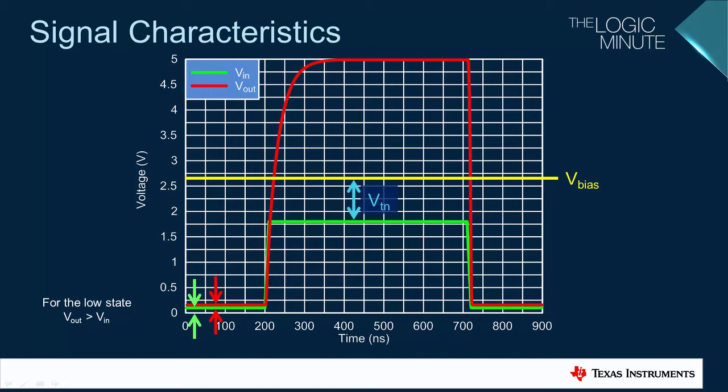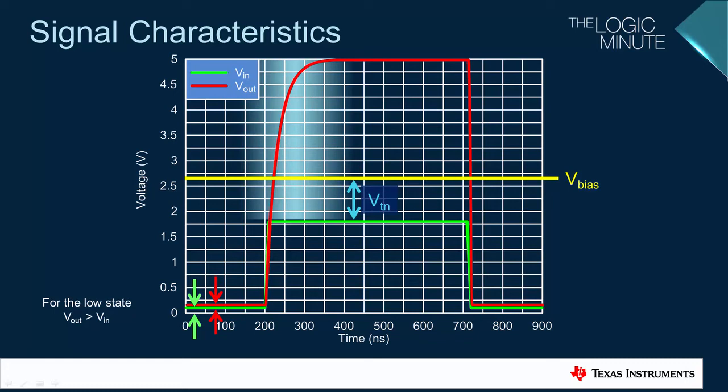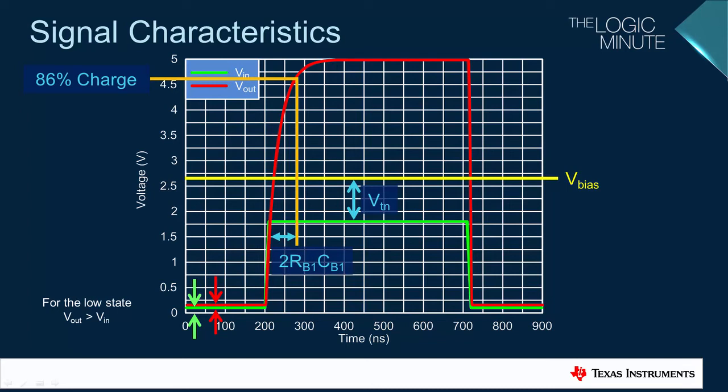The output voltage rise time will be a function of the RC time constant and can be estimated as 2RC, which is how long it takes to get to approximately 86% additional charge from the forced voltage of VA to the final voltage of VB.